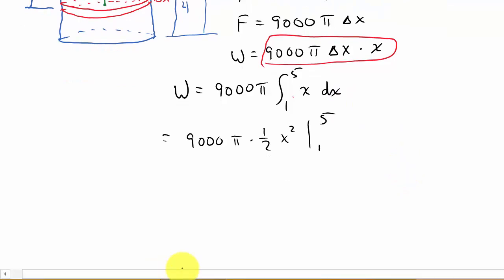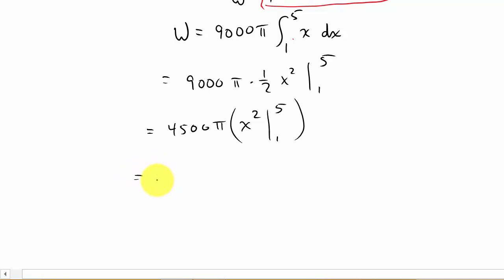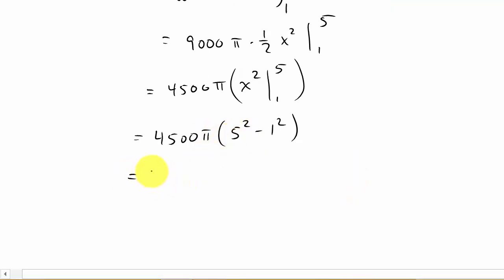And so that gives us, that's 4500 pi, one half times 9000 x squared from 1 to 5. I'm going to separate the variable from the constant when I plug in the 5 and the 1. So that's 4500 pi times, and then that's going to be 5 squared minus 1 squared. And then when we calculate this, this is going to give us 108,000 pi, and that is foot pounds. And this would be the work.